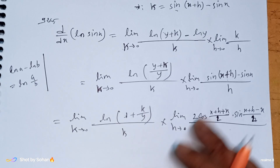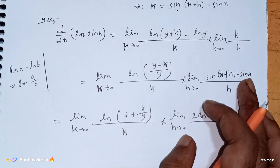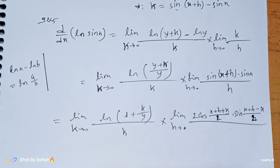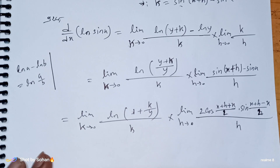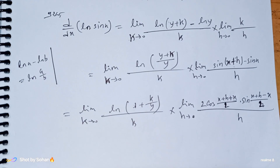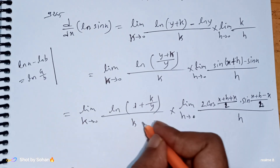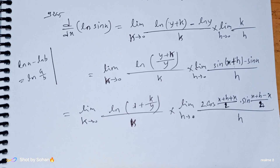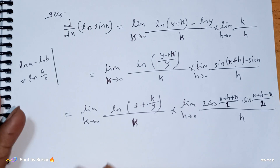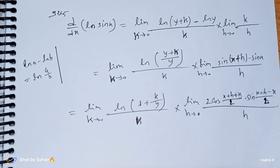Applying sin C minus sin D equals 2 cos((C+D)/2) sin((C-D)/2). We have done this identity many times. Now let's clear this and see our next question. We are going to record the class, not do a live class.